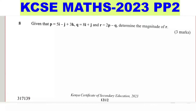Question 8. Given that p equals 5i minus j plus 3k, q equals 8i plus j, and r equals 2p minus q, determine the magnitude of r.